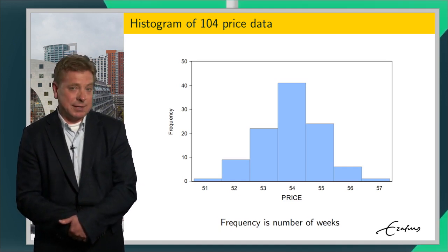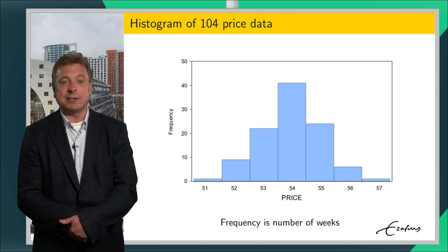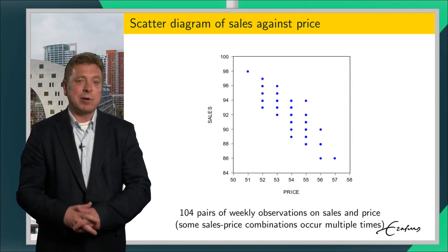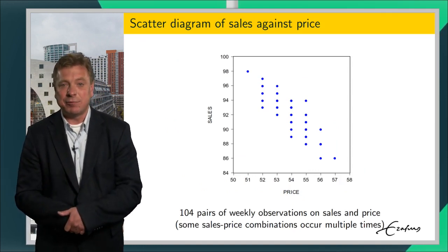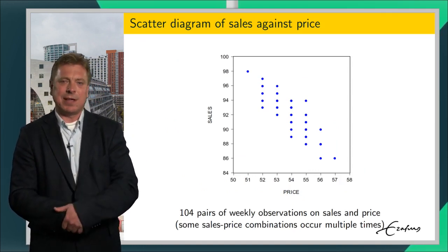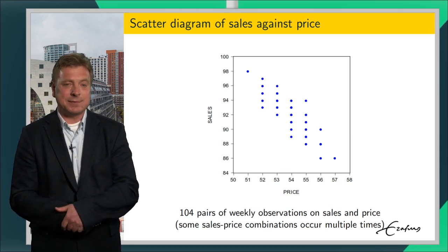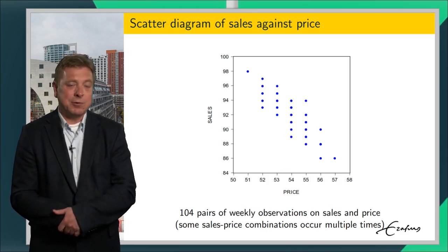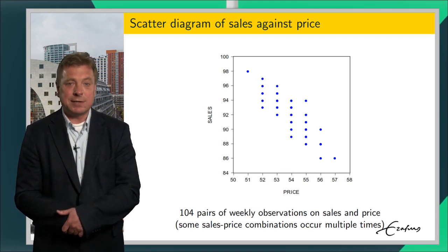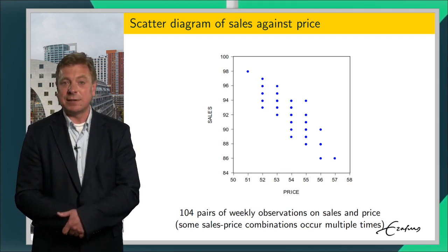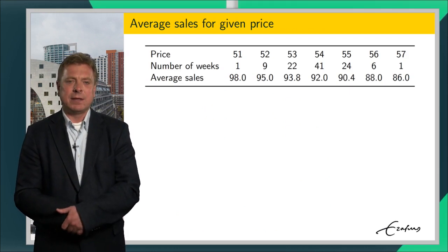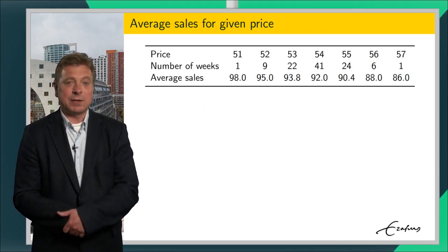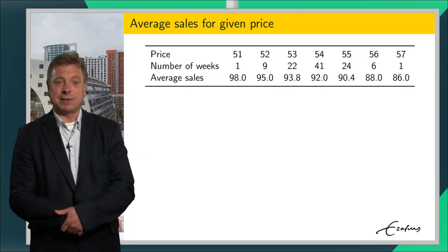When we plot sales against price that occur in the same week, we get the following scatter diagram. Note that the number of points in this diagram is less than 104, because some weeks have identical values for price and sales. You can observe that higher prices associate in general with lower sales, and lower prices with higher sales. You can also see this in the table, where lower prices are associated with higher sales at the left part of the table.